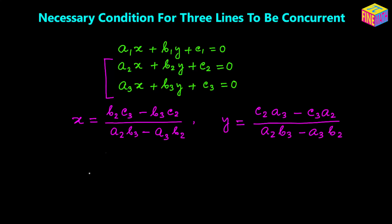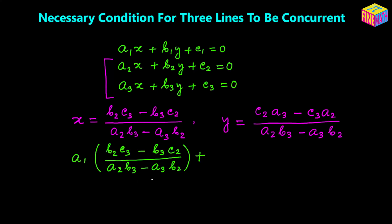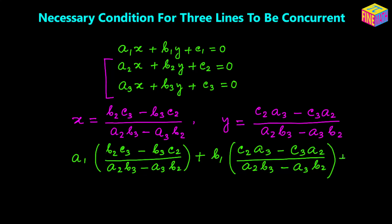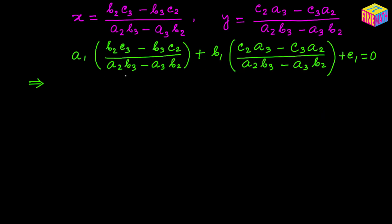We get something like this: a₁ times the value of x, then b₁ times the value of y, plus c₁, and all of this equals 0. If we simplify this and multiply both sides by the denominator — which is a₂b₃ minus a₃b₂ — we multiply both sides of the equation by that quantity.